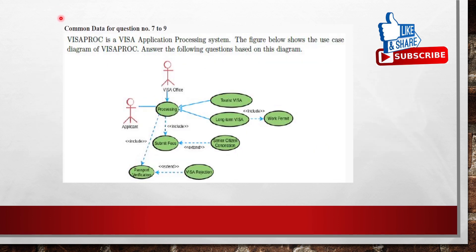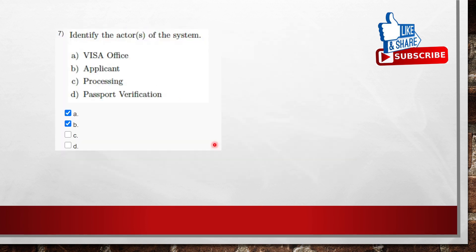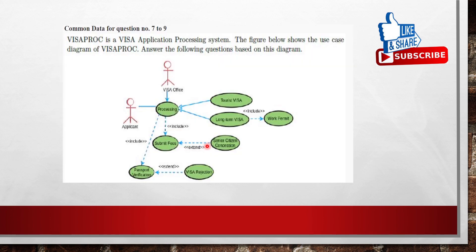Now we come to the common data for questions 7, 8, and 9. Visa process is a visa application processing system. The figure shows the use case diagram of Visa Process. We have two actors: Visa Office and Applicant. The Applicant is a human actor, and the Visa Office is a system, though it is a system it can still be considered an actor. There are use cases and relationships including generalization, include, and extend. Generalization is a parent-child relationship; include means a use case is used by default; extend is an additional feature. The actors of the system are Visa Office and Applicant.